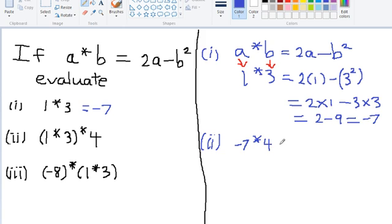Negative 7 star 4. We are using the same binary operation to figure out this problem. So we can see that a is now negative 7 and b is now 4. So we will substitute for a. So we will use 2 times negative 7, subtract 4 squared.